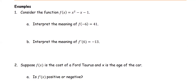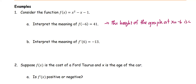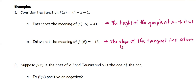In this example, we are going to interpret the meanings of the function and its derivative. Given f(x) equals x squared minus x minus 1, we interpret the meaning of f(-6) equals 41 and f'(6) equals negative 13. The function value f(-6) equals 41 means the height of the graph at x equals negative 6 is 41. For part b, f'(6) equals negative 13 means the slope of the tangent line at x equals 6 is negative 13.